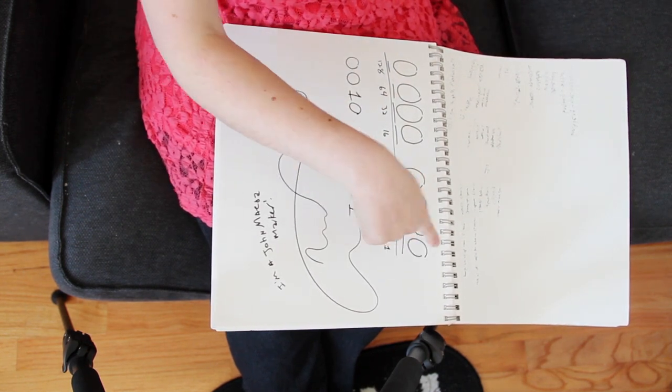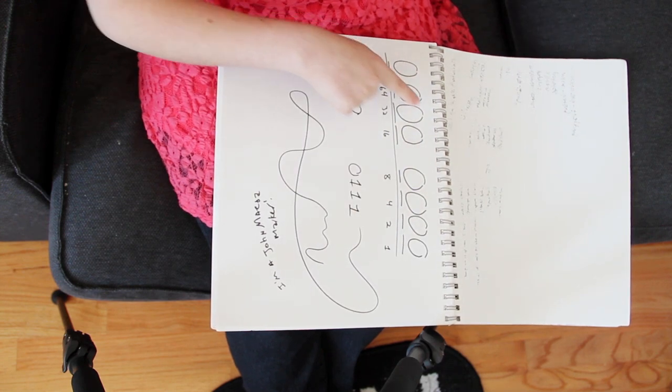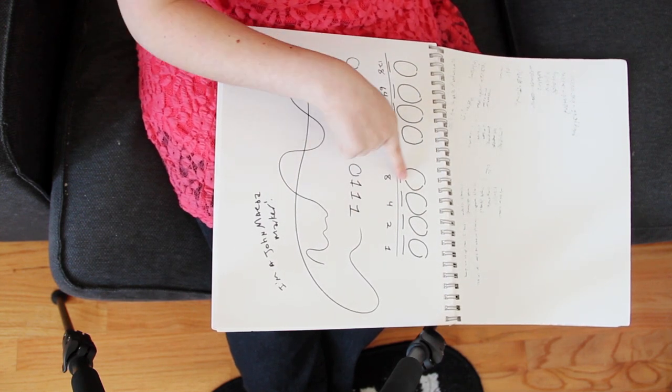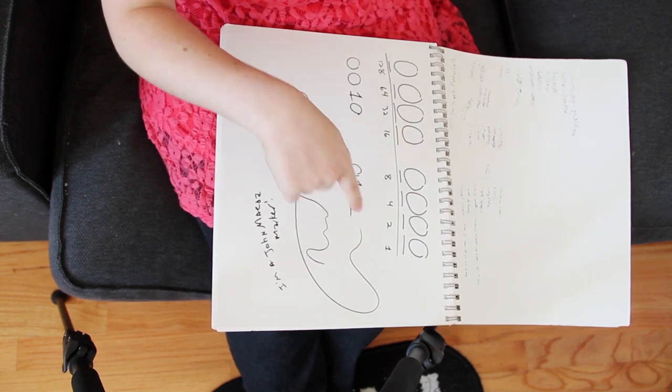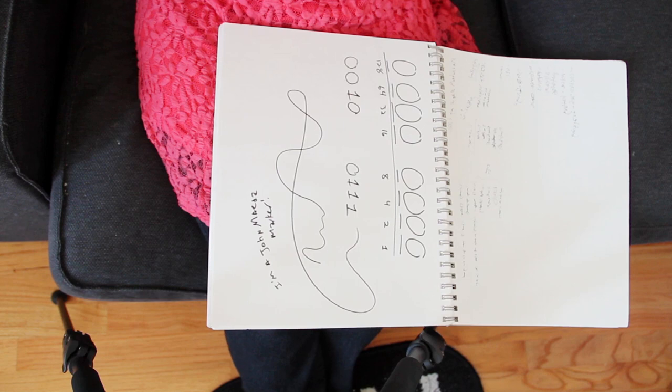And then if you have 1, that means that you take the number and you add it to any other number that says 1, and if it's 0, then you just ignore it. So if like this was a 1 and that was a 1, it would be 9. 1 plus 8 is 9. Do you guys get it?